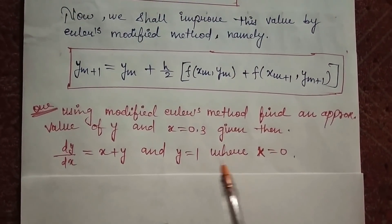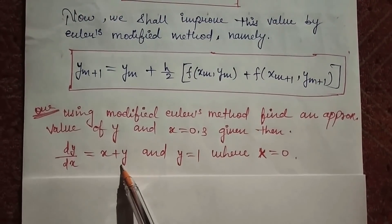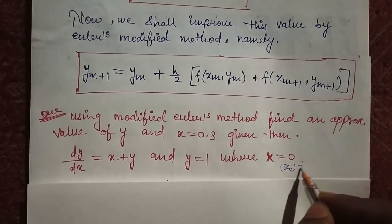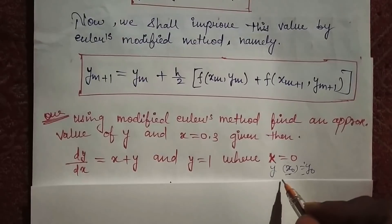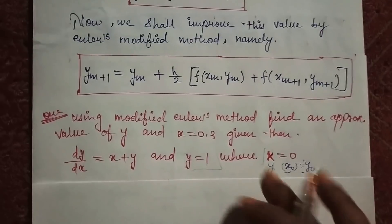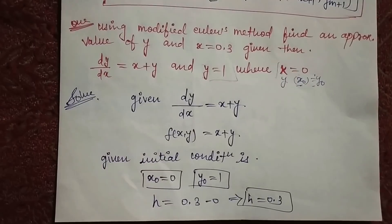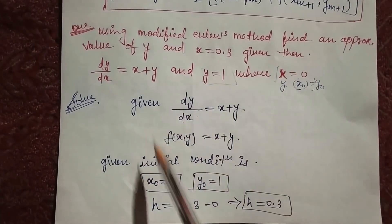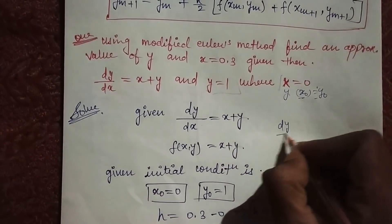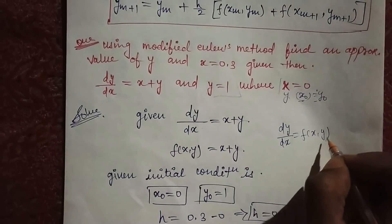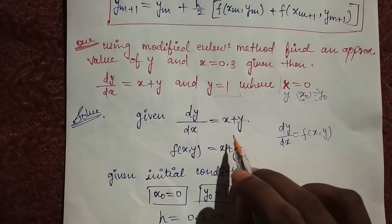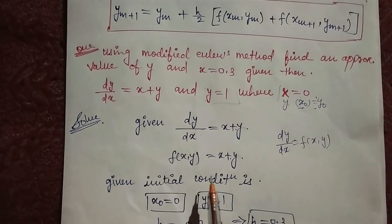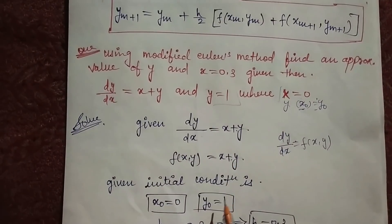See here — this is your question. This is your differential equation and this is your initial condition. I have already told you: if the initial condition is not given in this form, you will be given direct x0 and y0 values. So this is your x0 and this is your y0. The differential equation can also be written as fxy, where fxy equals x plus y. Initial condition: x0 = 0 and y0 = 1.